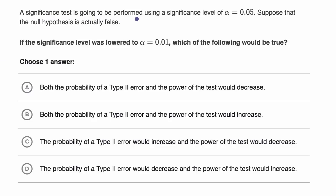A significance test is going to be performed using a significance level of 0.05. Suppose that the null hypothesis is actually false. If the significance level was lowered to 0.01, which of the following would be true?